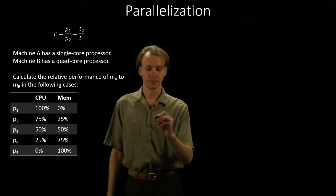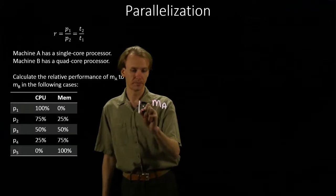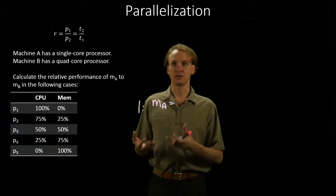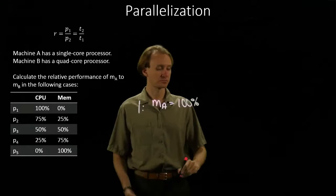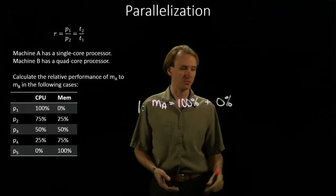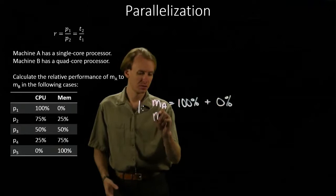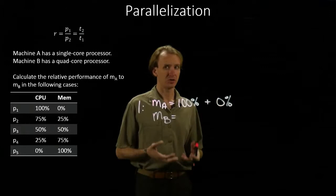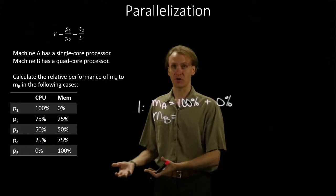In the first case, Machine A spends 100% of its time on the CPU instructions. I've got a single-core processor, so it runs all of those in serial, and then spends 0% of its time on the memory. Machine B is still spending 100% of its time on those CPU instructions, but those are going to run faster because it's got the quad-core processor instead of the single-core processor.